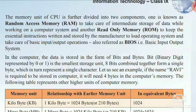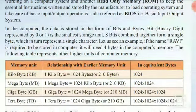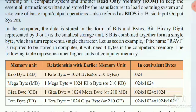The computer uses ROM to start other software and load the computer system. In a computer, data is stored in the form of bits and bytes. A bit means binary digit, represented by 0 and 1, and is the smallest storage unit. Eight bits combined together form a single byte, which in turn represents a single character. For example, if the name 'Ravi' is to be stored in the computer, it will need 4 bytes of memory.